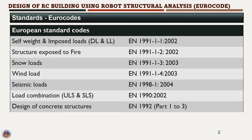Self-weight and imposed load — that is dead load and live load — are to be referred as per European standard EN 1991 Part 1 Section 1 (2002). Structure exposed to fire: EN 1991 Part 1 Section 2 (2002). Snow loads: EN 1991 Part 1 Section 3 (2003). Wind load: EN 1991 Part 1 Section 4 (2003). For seismic load: EN 1998 Part 2-1 (2004). Load combinations in ultimate limit state and serviceability limit state: EN 1990.